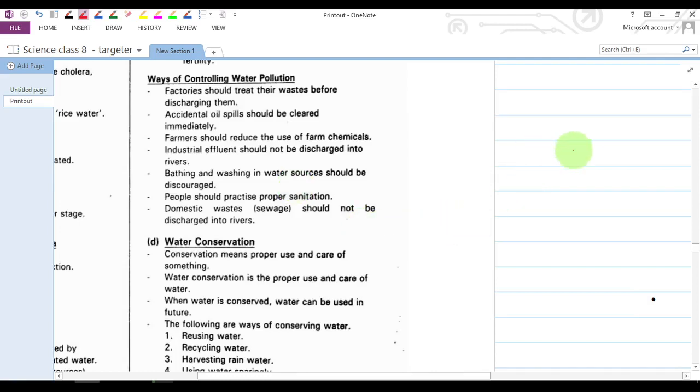In this video we shall look at ways of controlling water pollution. I hope you remember that water pollution is the introduction of waste products into water that makes it harmful to human beings. There are several factors that make water polluted, such as introducing waste into water, oil spillage in water, and chemicals.